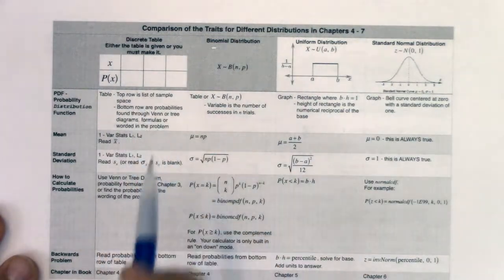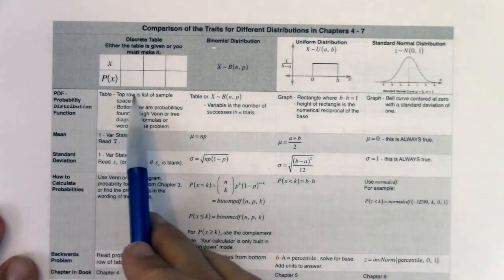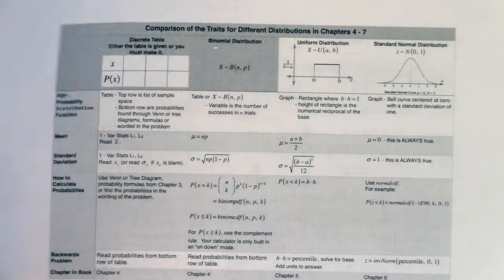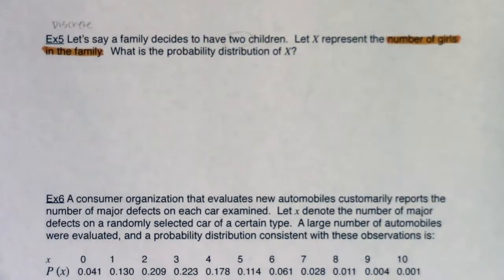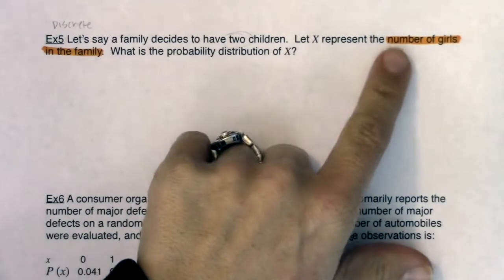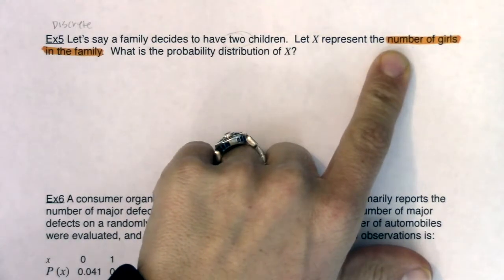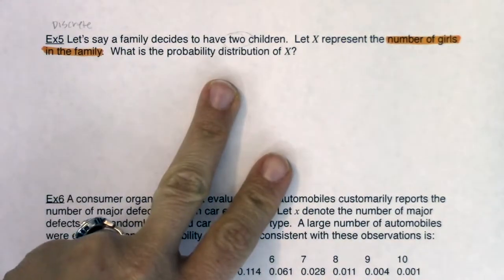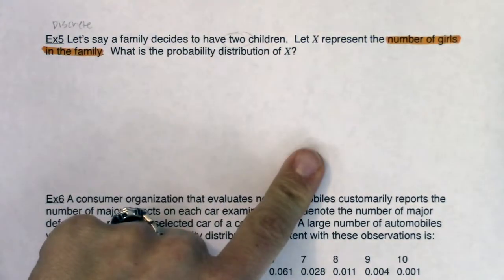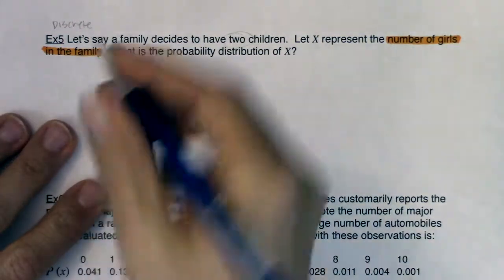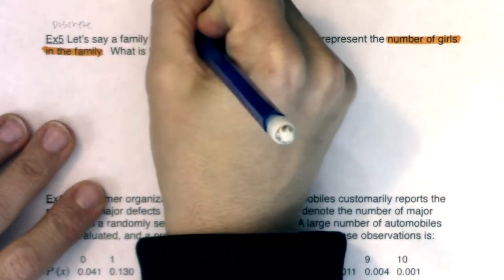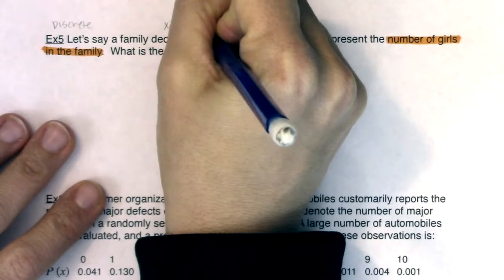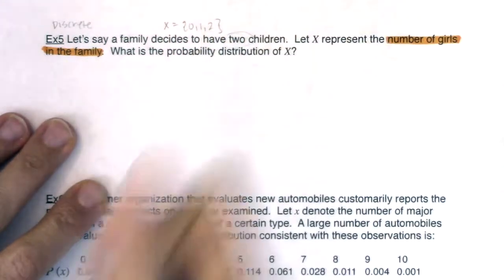I'm going to make myself a table, but before I make that table, I need to know my sample space. If I'm going to have two kids, and gender is binary, and I'm counting the number of girls — how many girls might I have? Maybe both kids are girls, maybe one is a girl, or maybe zero are girls. So my sample space is the numbers zero, one, and two. When it's discrete like this, I can make a list.